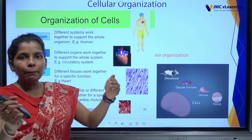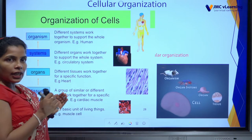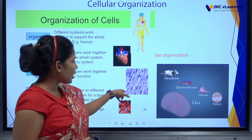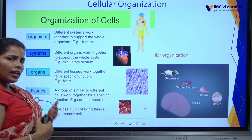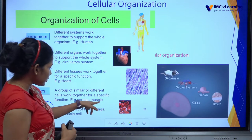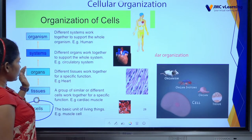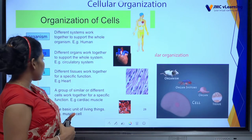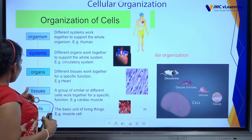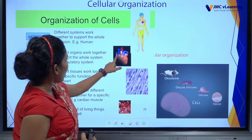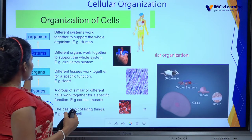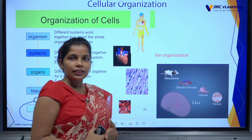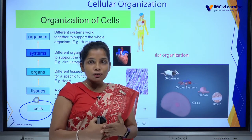Tissues means a combination of cells — we call it tissues. An example is cardiac muscle tissue, which you can find in your heart. Organs means a combination of tissues — for example, the heart and skin. Skin is the largest organ in the human body. Systems means a combination of organs — for example, the circulatory system, respiratory system, excretory system, and nerve system.